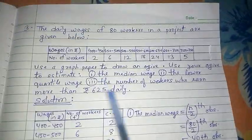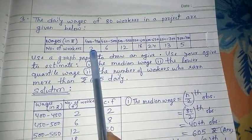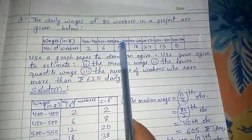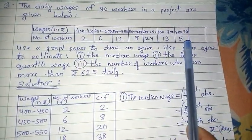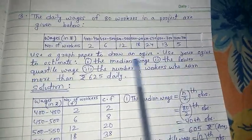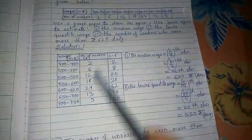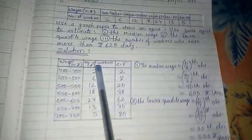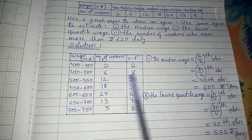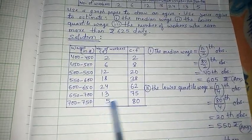One more question. Here you can see the wages of 80 workers and number of workers. 400 to 450, two people are there. 450 to 500, six. 500 to 550, 12. It goes on, and the last wage is 700 to 750 with 5 workers. Overall 80 workers. Now use graph paper and draw the ogive. To draw the ogive, we write this same thing in the columns. Wages in rupees and number of workers, which I write as F and CF. 2, then 2 plus 6 is 8, 8 plus 12 is 20, plus 18 is 38, 38 plus 24 is 62, 62 plus 13 is 75, 75 plus 5 is 80. We are correct because 80 workers here also 80.